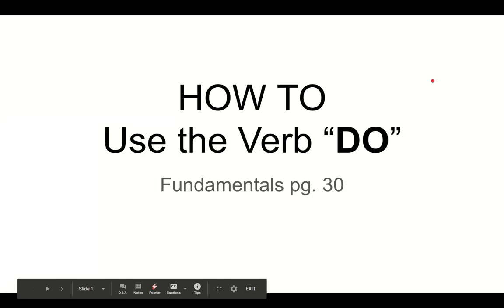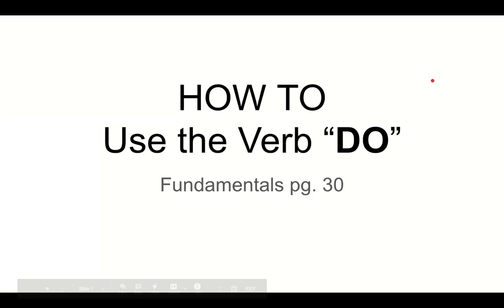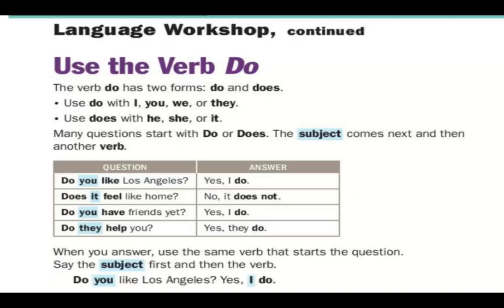We're going to talk today about how to use the verb 'do' using the lesson in the fundamentals textbook on page 30. The verb 'do' has two forms: 'do' and 'does.' 'Do' is used with I, you, we, and they.